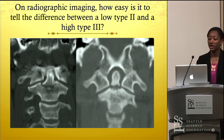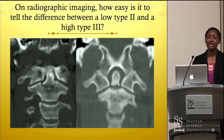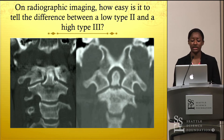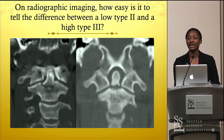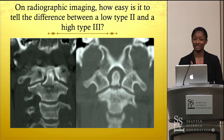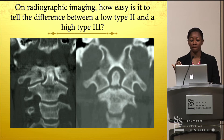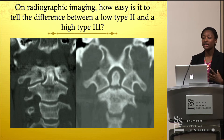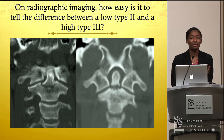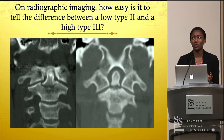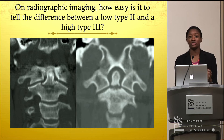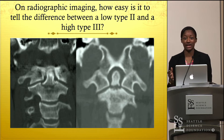On radiographic imaging, how easy is it to tell the difference between a low type 2 fracture — a fracture at the neck — and a high type 3, which extends through the vertebral body? We can begin to see where things get a little confusing: where exactly do you draw the line between a type 2 and a type 3?